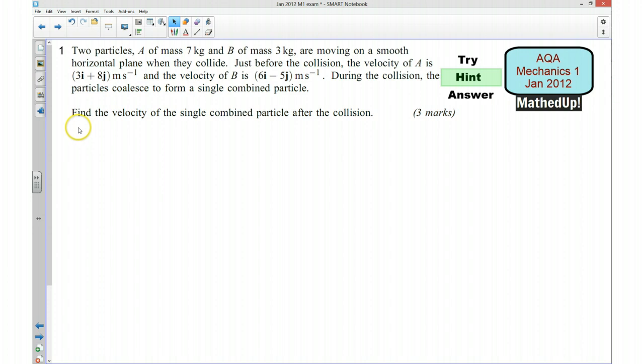So we want to find the velocity of the single combined particle after the collision. Now my hint to you here is that what you want to think about is what is the new mass of the single combined particle going to be. You can then use your conservation of momentum to decide what the velocity is going to be. If you'd now like to pause the video and see if you can have a go at answering this question.